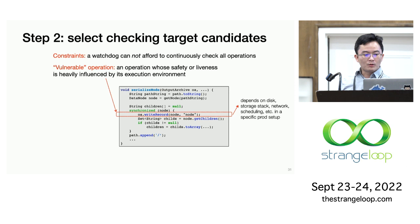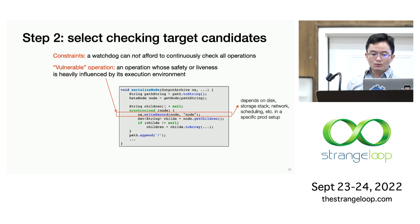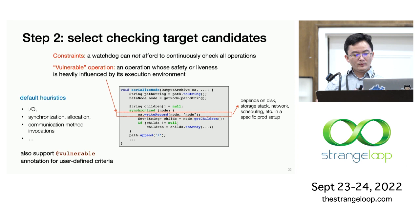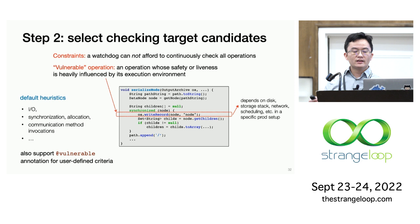The watchdog focuses on reporting checking operations that may potentially exhibit unique issues in a production setup. We call these operations vulnerable operations. For example, a write-to-record operation actually depends on the disk and the storage stack, the network, and scheduling in a particular production setup. Including this kind of operation in a watchdog can likely expose some interesting issues. OmegaGen uses a simple heuristic-based method to infer how vulnerable an operation is. The default heuristics include I/O, synchronization, and communication, and we also support user-defined criteria using a vulnerable annotation.